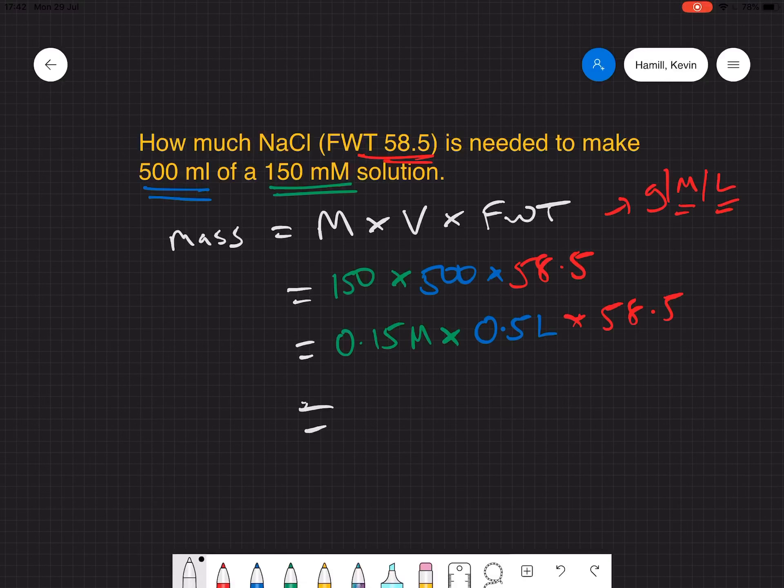Once you do that, plug it into your calculator, you get 4.3875 grams, which you would then go and weigh out, add volume to until you got to 500 mils. That's relatively straightforward, and you can imagine plugging in different numbers in different scenarios.